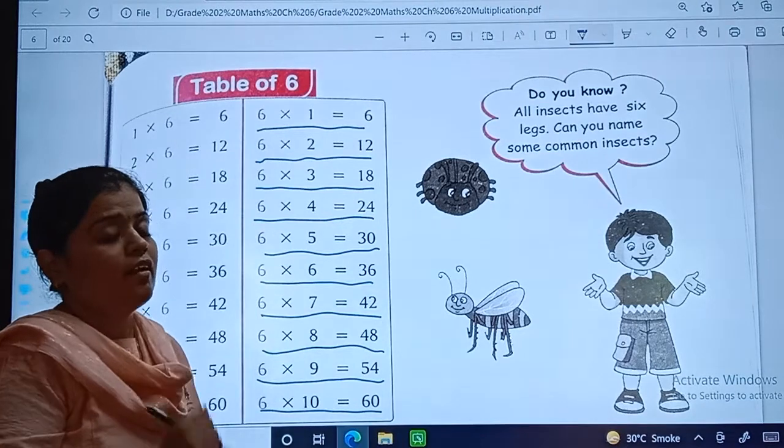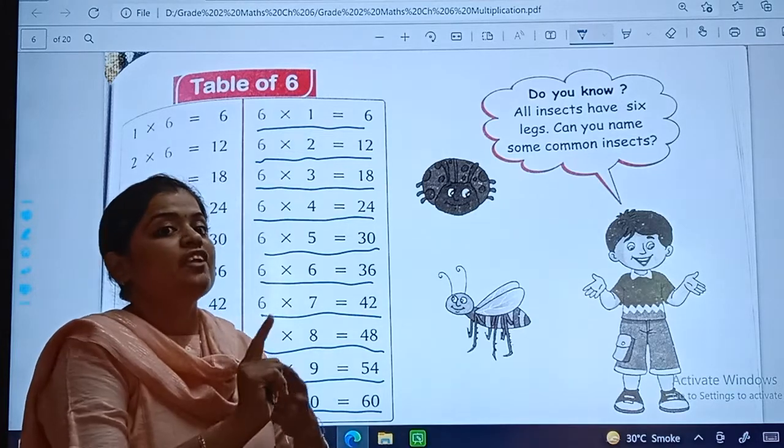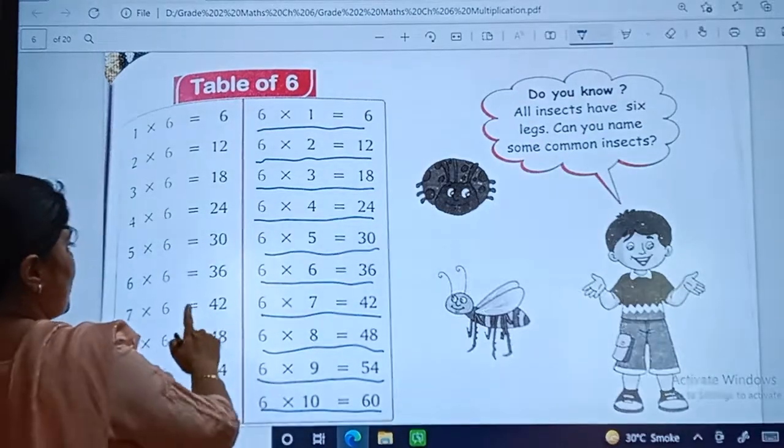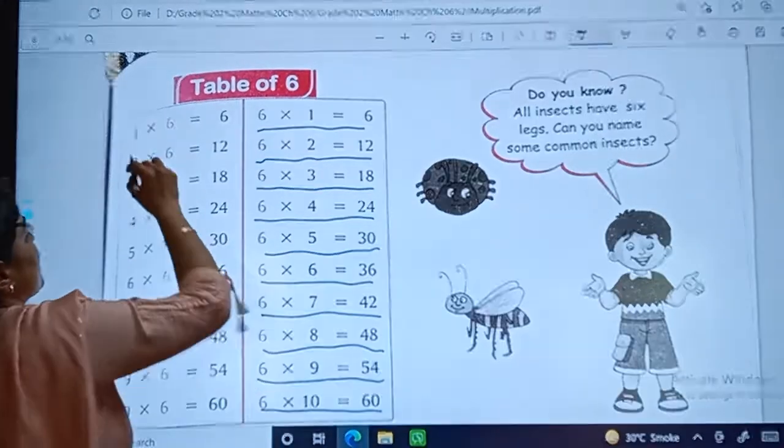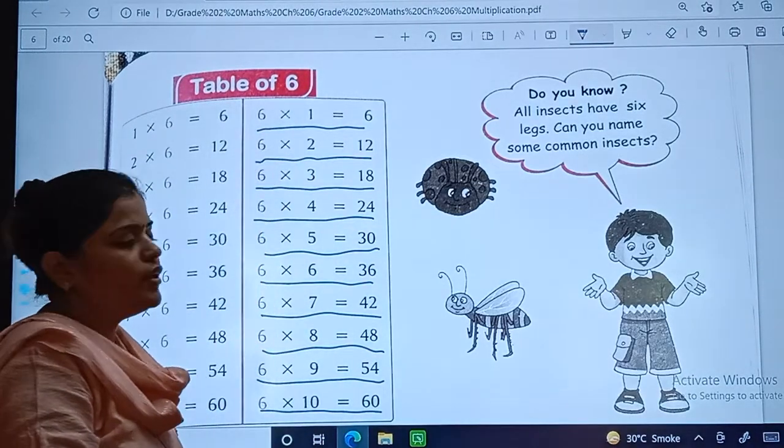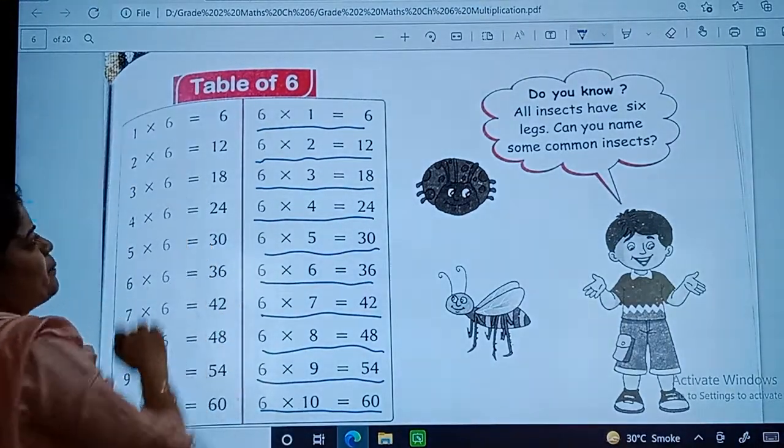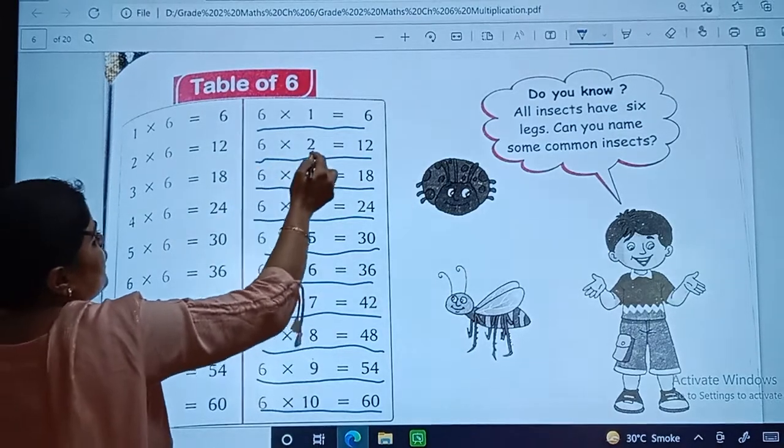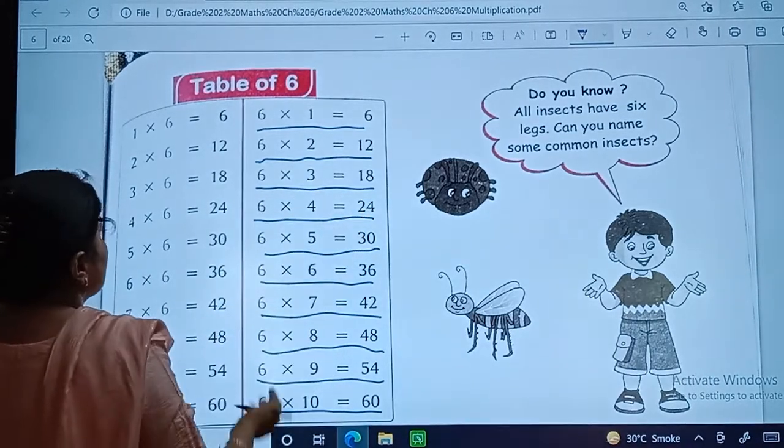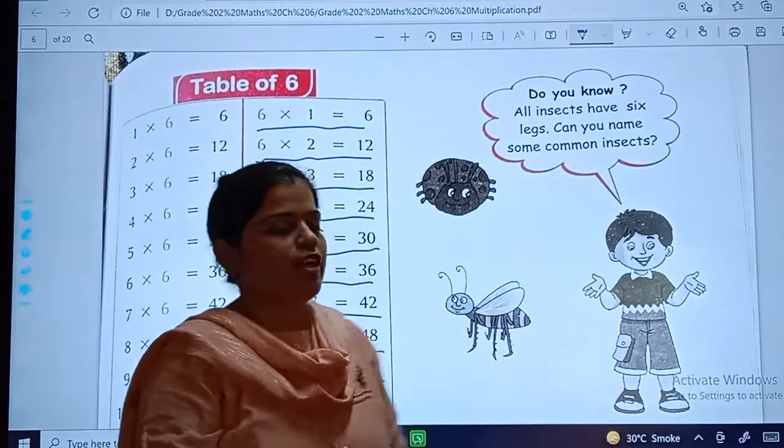Ok dear students, now do you remember the properties which we learned? Yes, in that what was the first property? When we are changing the order of the number, answer is not changing. So we can check the property here. See, 1 times 6 are 6, 6 ones are 6. We are changing only the order of the numbers, but our answer is not changing. Same way, 2 multiplied by 6 is equal to 6 multiplied by 2, is equal to 12. So when we are changing the order of the number, product will not change.